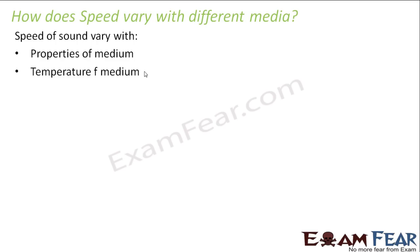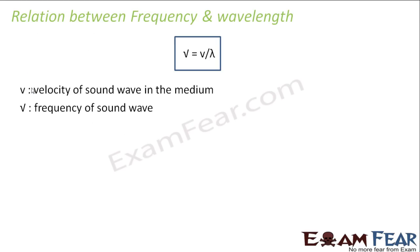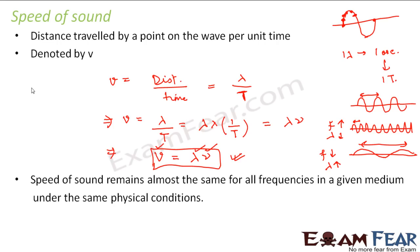Temperature of the medium also matters — water may be at one temperature and air at another. Pressure of the medium is another factor. Even within the same medium, if you increase the temperature or decrease the pressure, the speed of the sound wave may vary. That is why speed of sound remains almost the same for all frequencies in a given medium under the same physical conditions. If you change the temperature or pressure of the medium, the speed of the sound wave will also change. If you keep all those things constant, then for different frequencies the speed remains the same.